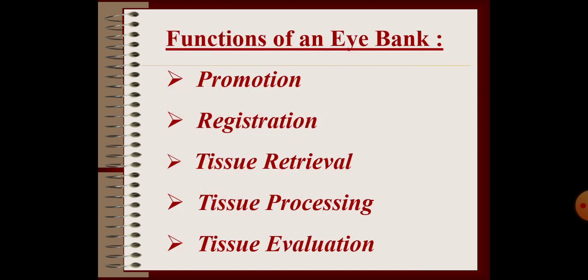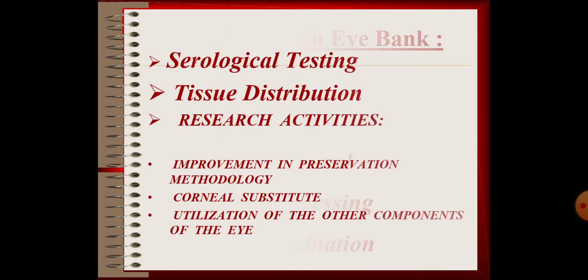What are the functions of an eye bank? Promotion, registration, tissue retrieval, tissue processing, tissue evaluation, serological testing, tissue distribution, research activities for the improvement in preservation methodology, corneal substitution, and utilization of other components of the eye bank.